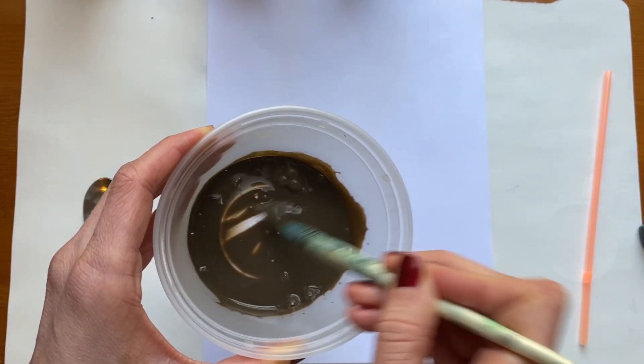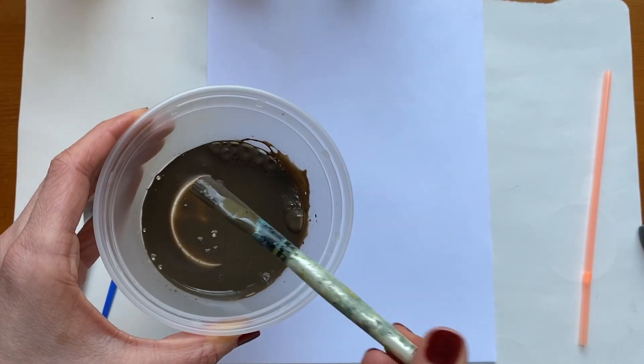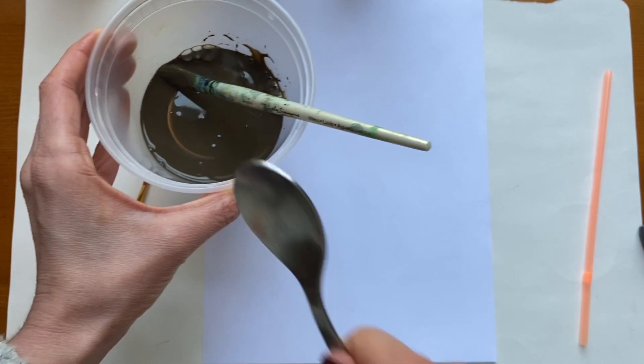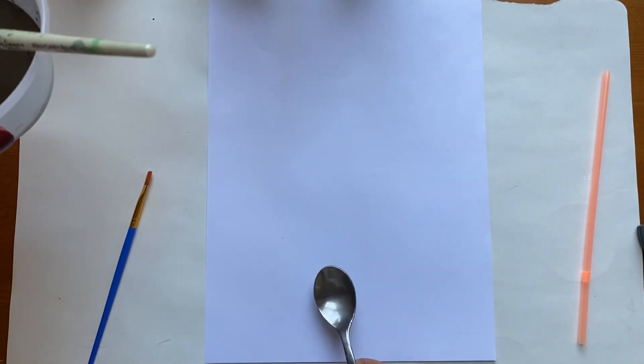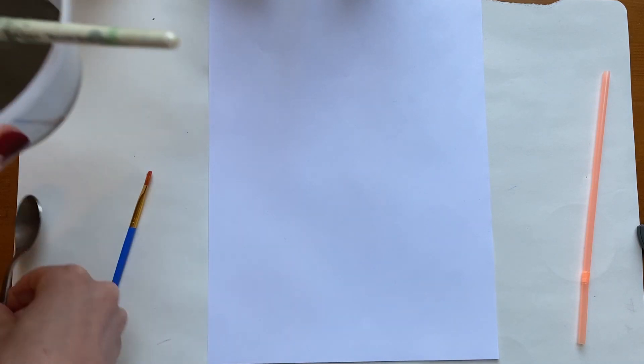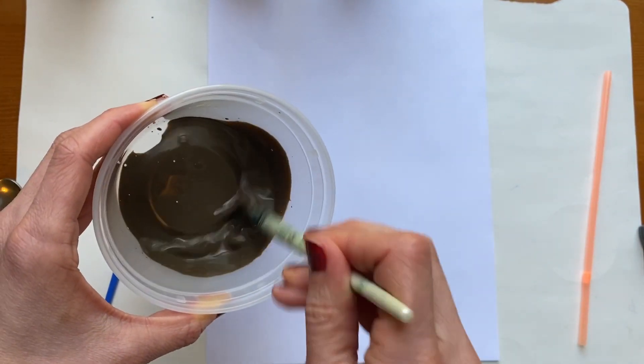If you don't have a bigger paintbrush, you could also use like a little spoon and just put a little tiny bit—don't make a huge mess—but put a little bit on the paper and that could work. So there's no chunks, it's nice and smooth.